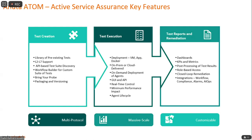A simple example of closed-loop remediation: if there is an SLA breach — say the threshold delay was set to 20 milliseconds for a ping test, but a 30-millisecond delay was observed in the report — that can be logged as an alert on Atom.